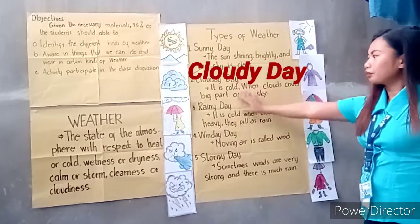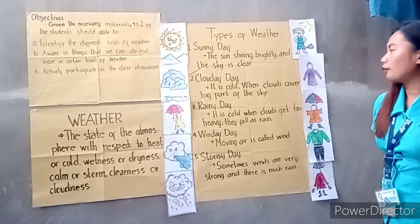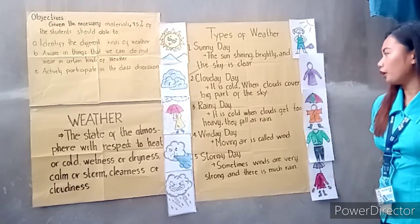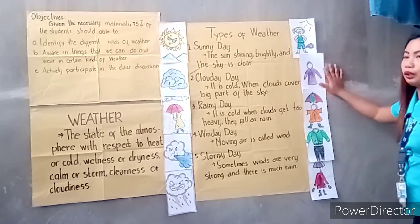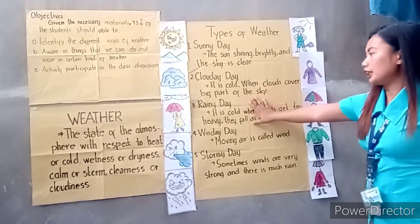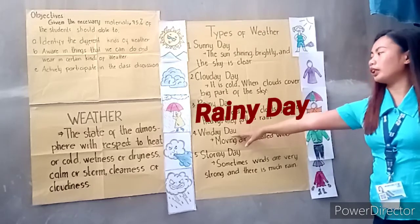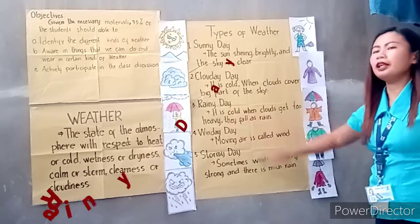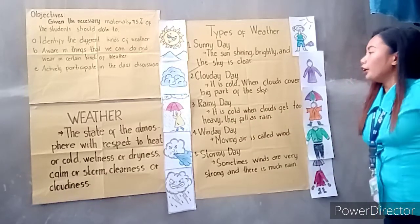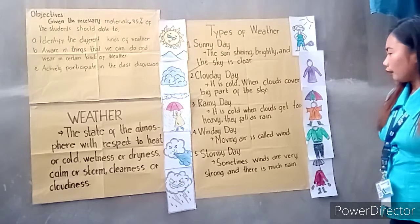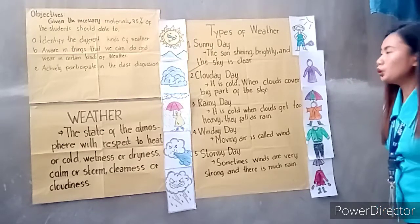So second, cloudy day. Cloudy day: it is cold when the clouds cover a big part of the sky. So we need to use a sweater. So third, it's a rainy day. Kia Jade, can you read what is a rainy day? Okay, very good. Rainy day: it is cold when clouds get too heavy, they fall as rain.